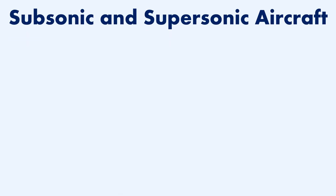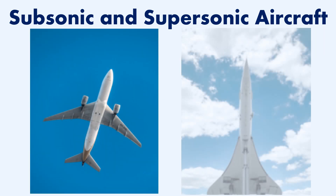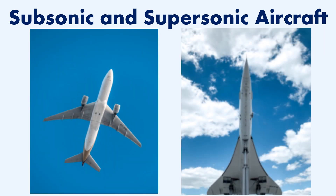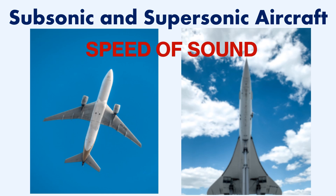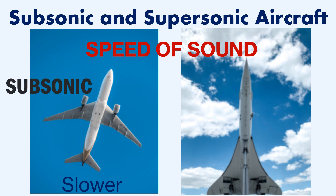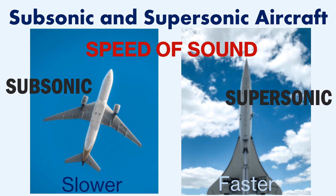First, let's look at what is meant by a subsonic and supersonic aircraft. An aircraft may be defined as subsonic or supersonic by comparing its speed with the speed of sound. If the aircraft flies slower than the speed of sound, it is called a subsonic aircraft. If it flies faster, it is called a supersonic aircraft. To understand this better, we need to know something called the Mach number.